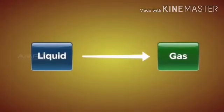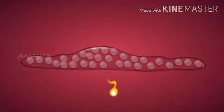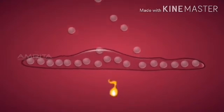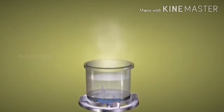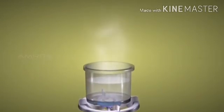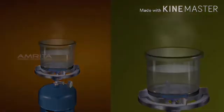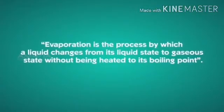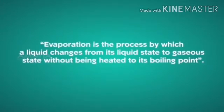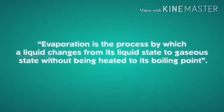A liquid changes its state to gaseous form through vaporization. The space between particles increases when heated, thereby forming gas. When water is heated, vapor arises from its surface and water in a liquid state is converted to a gaseous state before reaching its boiling point. Such a process is known as evaporation — the process by which a liquid changes from its liquid state to gaseous state without being heated to its boiling point.